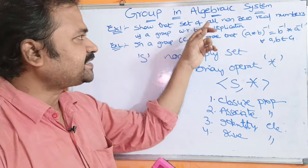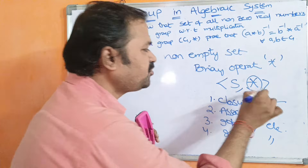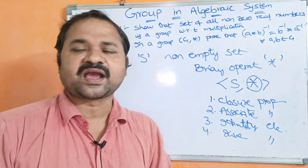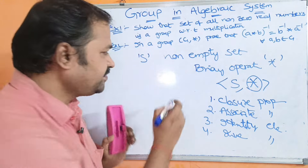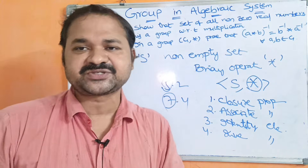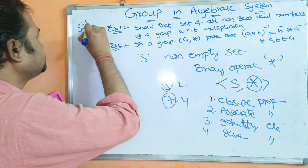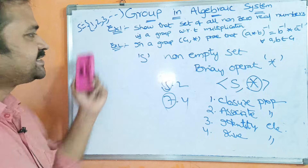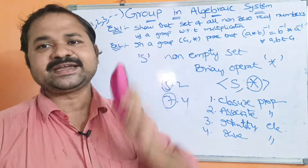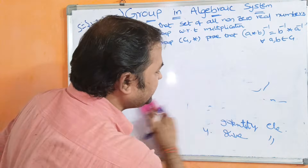The first example: show that the set of all non-zero real numbers is a group with respect to multiplication. Here the operation is multiplication, and the set is all non-zero real numbers. Real numbers may contain natural numbers — for example, 5.2 or 7.4 contain 5 and 7. The set S does not include 0, so it contains 1, 2, 3, and so on. We have to prove that it is a group.